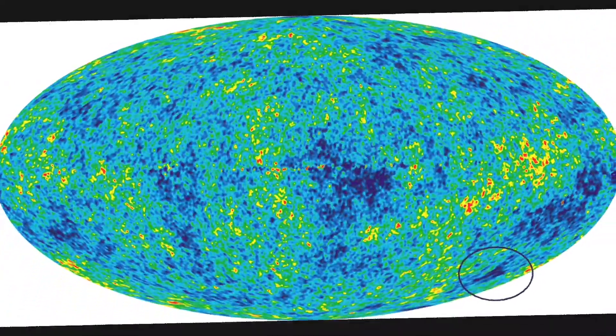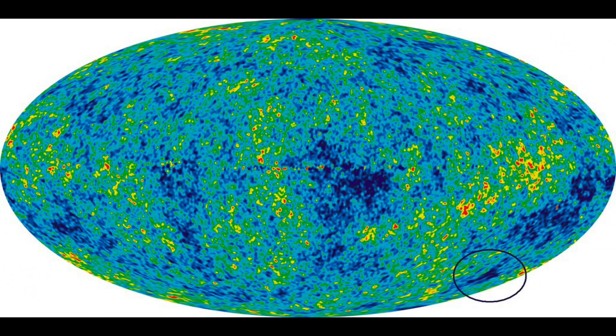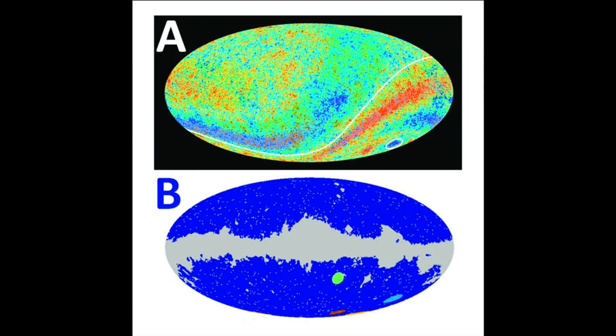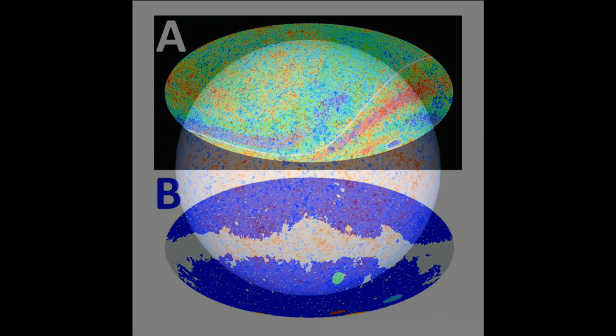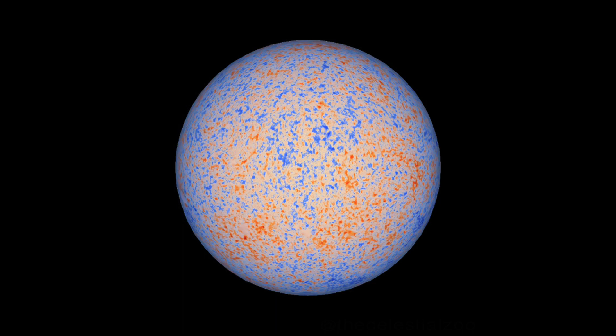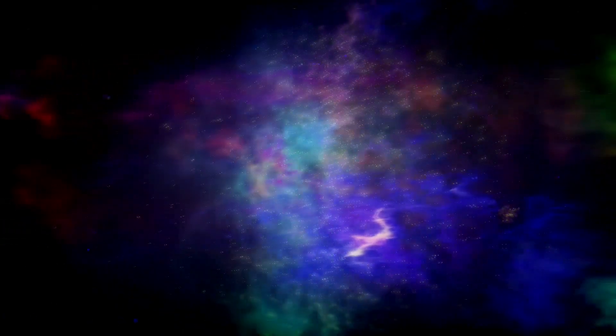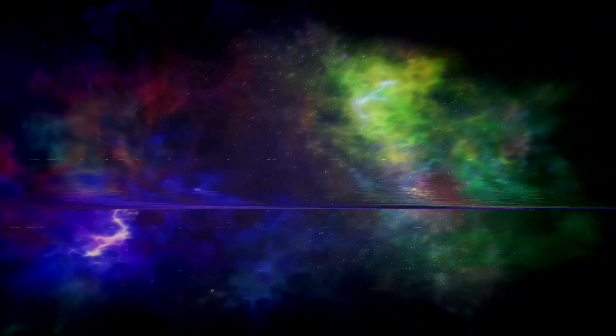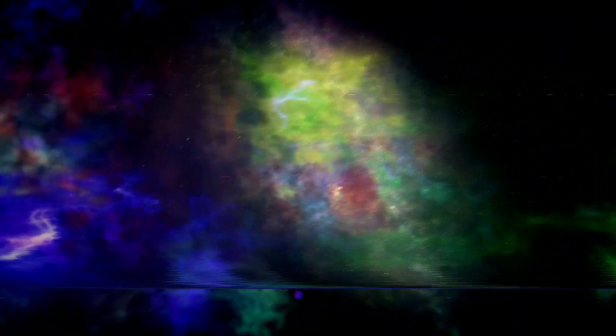The discovery of cosmic microwave background radiation is another shocking discovery. This is the afterglow of the Big Bang, and it is the oldest light in the universe. The cosmic microwave background radiation was discovered in 1964 by Arno Penzias and Robert Wilson, and it provided strong evidence of the Big Bang theory.